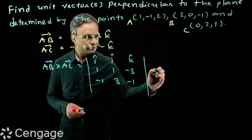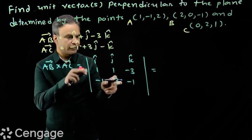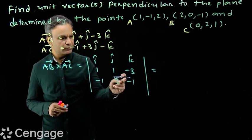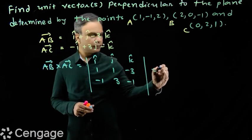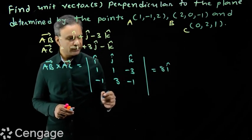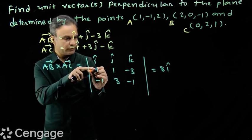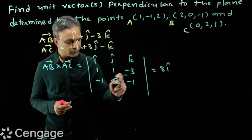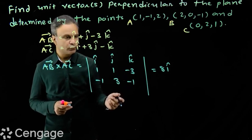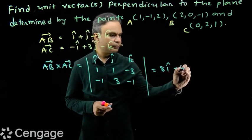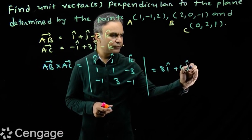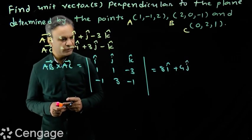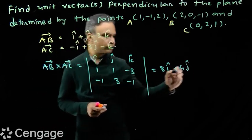Then this vector will be: coefficient of i will be -1 + 9, that means 8, we have 8i. And we have here -1 minus 3, so -4, so coefficient of j will be plus 4. And coefficient of k will be 4.